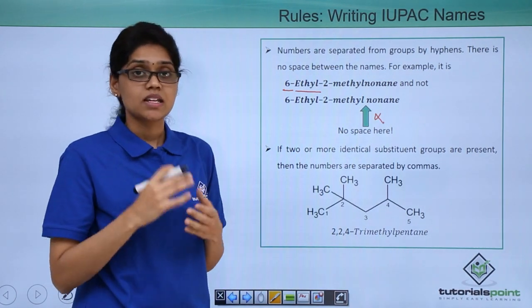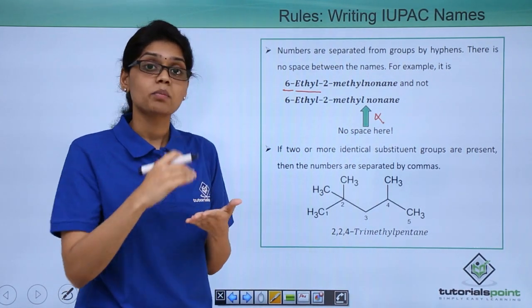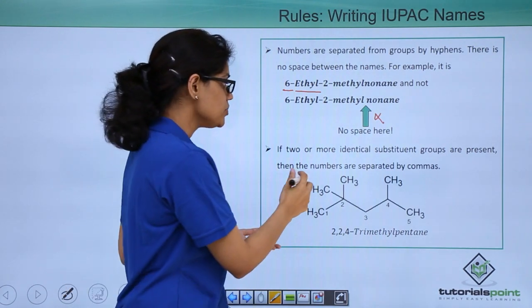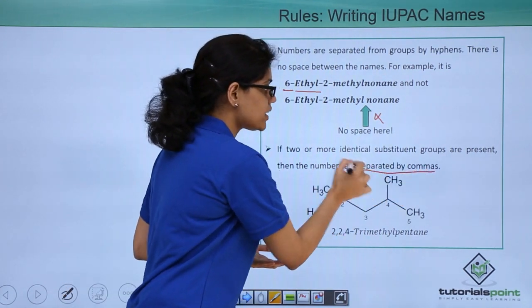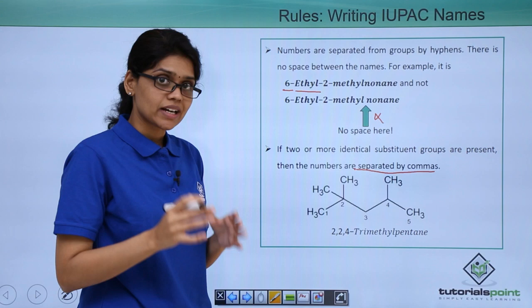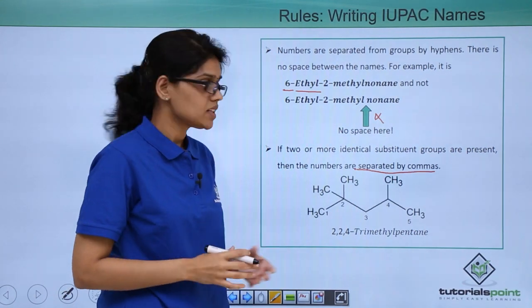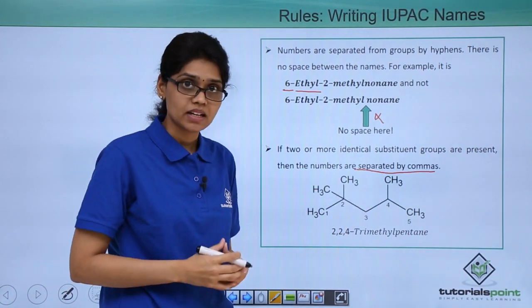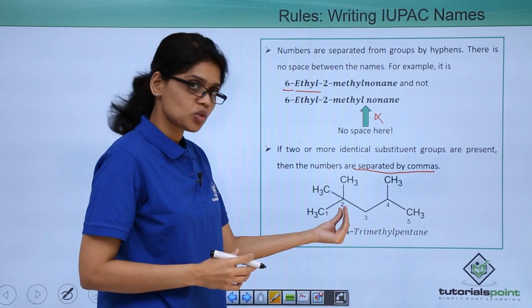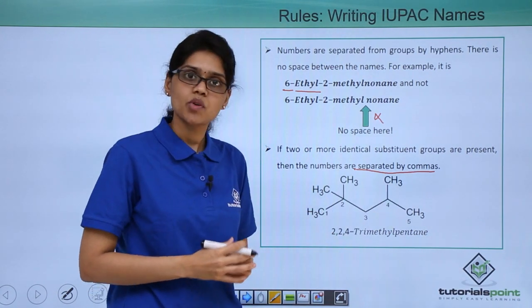The second thing to consider is that if you have multiple substituents or multiple identical substituents here then the numbers are essentially separated by commas. For that look at the structure here you can see that all the substituents are nothing but methyl and you have 2-methyl at C2 position and 1-methyl at C4 position.